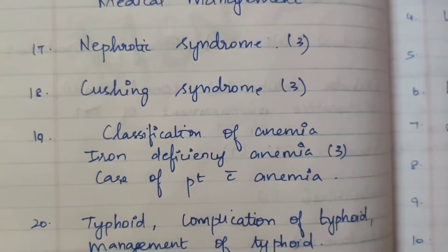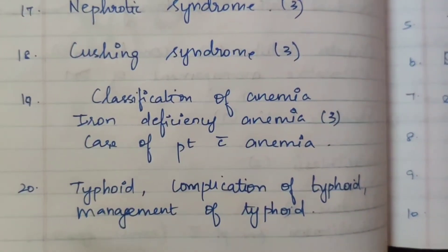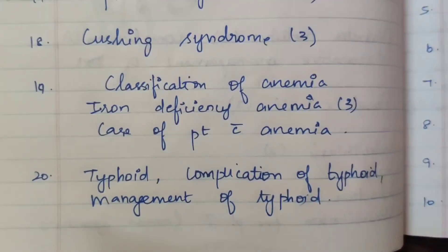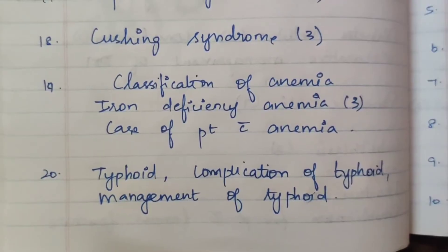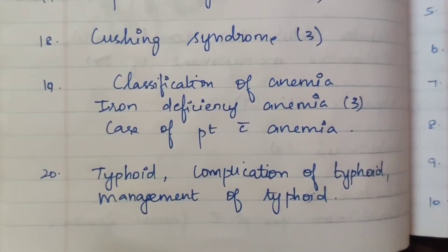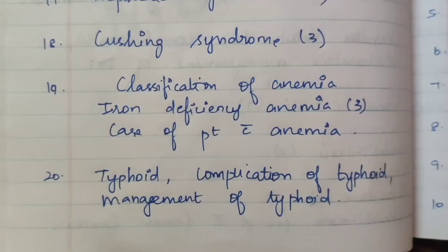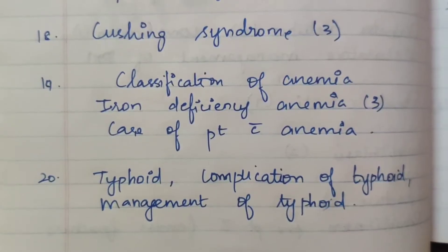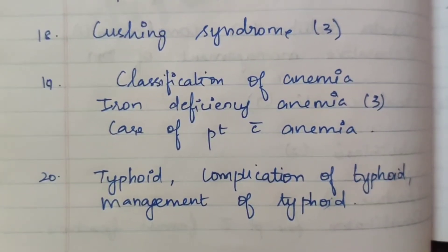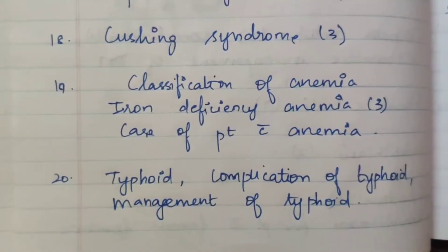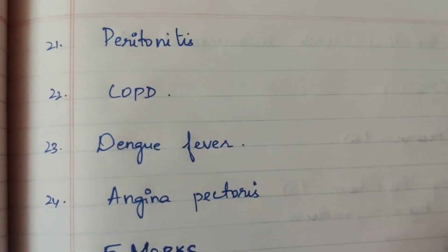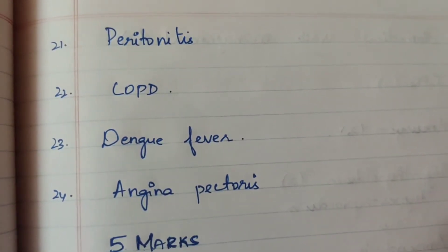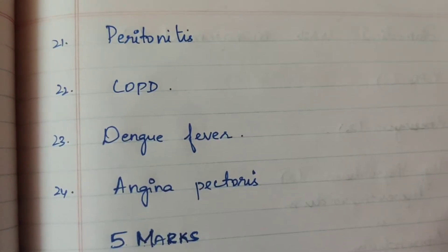17th one is nephrotic syndrome, 3 times. 18th one is Cushing syndrome, 3 times. 19th one is classification of anemia, 1 time as 5 marks; iron deficiency anemia, 1 time as 15 marks and 5 marks — total 3 times. Care of patient with anemia, 5 marks. 20th question is typhoid — complications of typhoid and management of typhoid. This appears a single time.